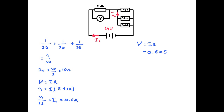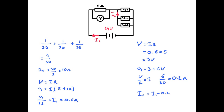Now I can work out the voltage, because with 0.6 amps going through that 5-ohm resistor I can apply V equals IR, giving 3 volts across the 5-ohm resistor. Therefore we must also have 6 volts across the 30-ohm resistors, because 9 minus 3 equals 6. Using V over R equals I: 6 divided by 30 is 0.2 amps through the top resistor. Since the total current at the junction is 0.6 amps, the current going down is 0.6 minus 0.2, which is 0.4 amps.